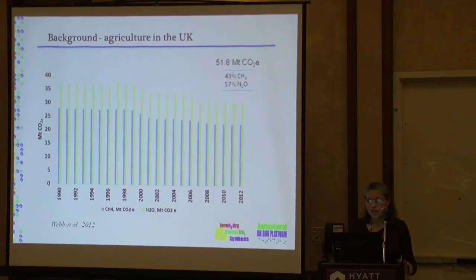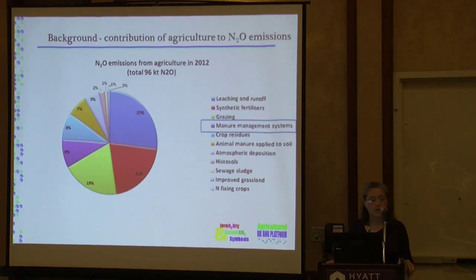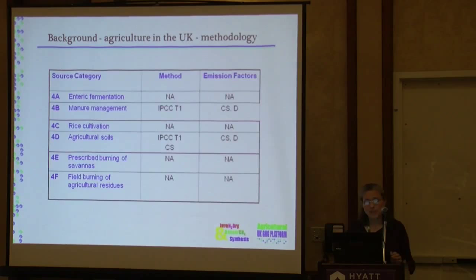N2O is an important contributor. This slide shows soils as a source of N2O, mostly dominated in the UK by indirect emissions from leaching and runoff, synthetic fertilizers, and grazing. Manure management is shown separately, as it is not included in soils, but there are other sources that contribute to nitrogen input into soils. The agricultural inventory is comprised of a few categories — six sources, of which soils is included.